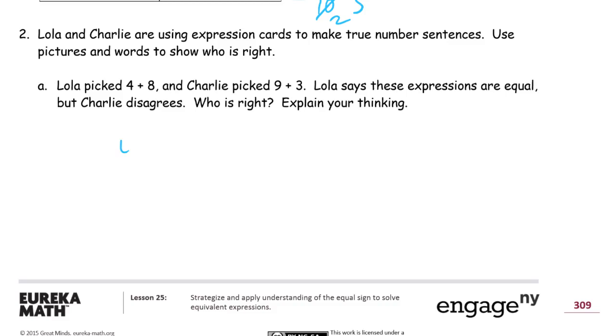So we're going to see what is 4+8, and what is 9+3, and see if they're the same, and then we'll know who's right. So let's see, Lola picked 4+8, which equals, well, 8 needs 2 to make 10, right? And there'll be 2 left from that 4, so there's your 10, 2, that's 12. Charlie picked 9+3. We could just count that up, 10, 11, 12, right?